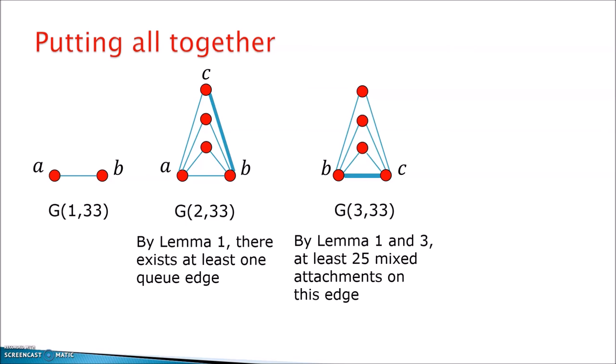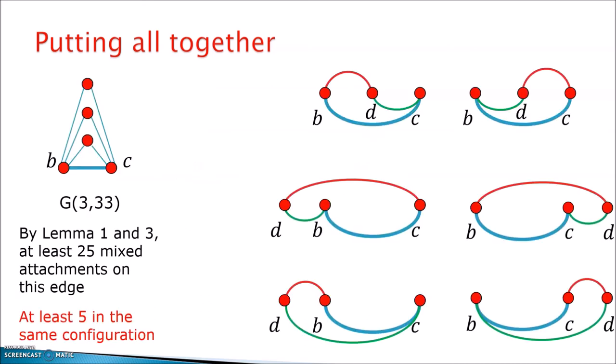So basically what we have is that we have at least 25 mixings. Now we forget the rest, we just focus on this vertex and 25 mixings. Now how can a mixed attachment look like?